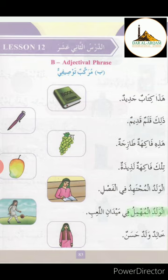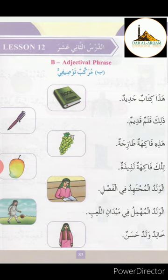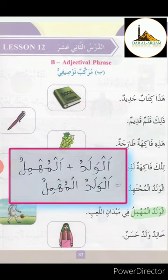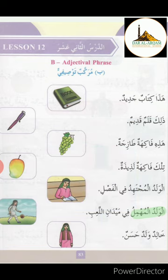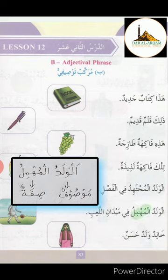الوَلَدُ المُجْتَهِدُ فِي مَيْدَانِ اللَّعِبِ. الوَلَدُ means 'the boy', مُجْتَهِدٌ here means 'careless'. وَلَدٌ مُجْتَهِدٌ — a careless boy. With alif-lam: الوَلَدُ + المُجْتَهِدُ = الوَلَدُ المُجْتَهِدُ — the careless boy. فِي مَيْدَانِ اللَّعِبِ means 'in the playground'. الوَلَدُ المُجْتَهِدُ فِي مَيْدَانِ اللَّعِبِ — The careless boy is in the playground. Here الوَلَدُ is mausuf and المُجْتَهِدُ is sifat.